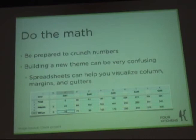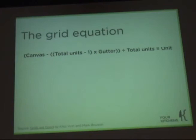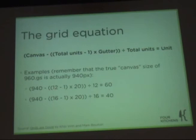There's a grid equation you can use to do it in one fell swoop. For the 12-column layout you get 60 pixels per column. For the 16-column layout, you get 40. You can deconstruct that on your own time.